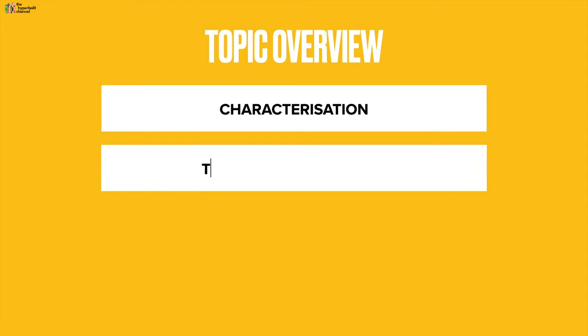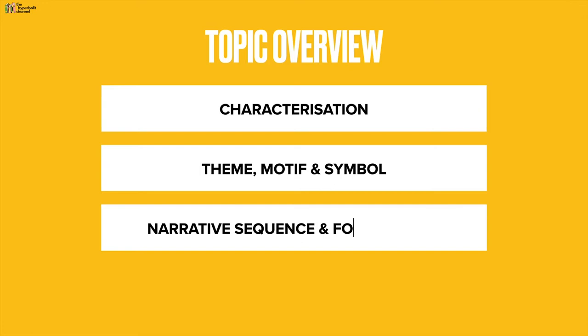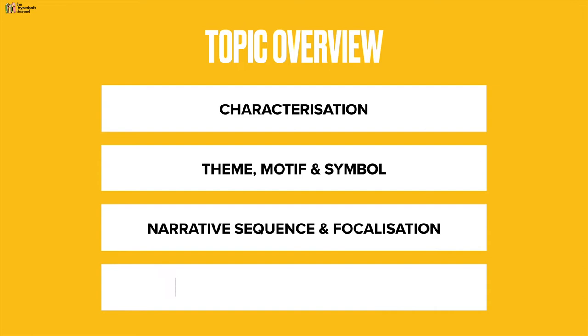Topic overview: we're first going to look at characterisation, then move on to looking at themes, motifs and symbols. And then we're going to look at narrative sequence and focalisation, which is another word for point of view. And finally, we're going to look at mood, setting and atmosphere.